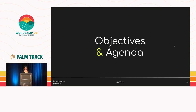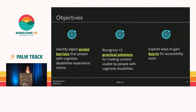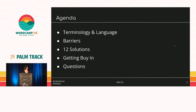So let's talk about what we're going to do today. We have three objectives: to identify access barriers that people with cognitive disabilities experience online; to recognize 12 practical solutions recommended by the W3C that make content usable by people with cognitive disabilities; and to explore ways to get buy-in from your stakeholders so you can put some of those solutions in place. Here's our agenda: first, terminology and language around disabilities and accessibility; then barriers; then the 12 solutions; then getting buy-in; and finally, questions.